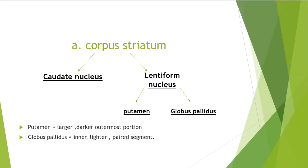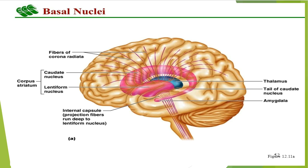The corpus striatum comprises two large nuclei: the caudate nucleus and the lentiform nucleus. The lentiform nucleus comprises the putamen and the globus pallidus. The putamen is the larger, darker, outermost portion, and the globus pallidus is the inner, lighter, pale segment. Now let's look at the caudate nucleus first.